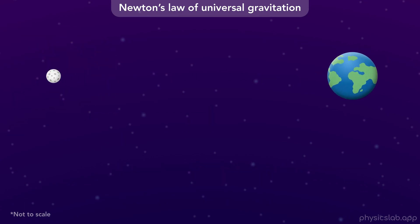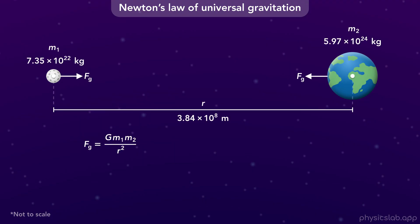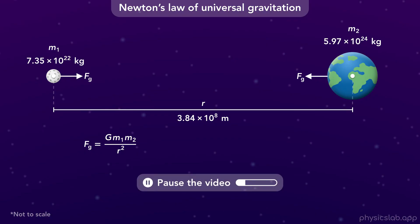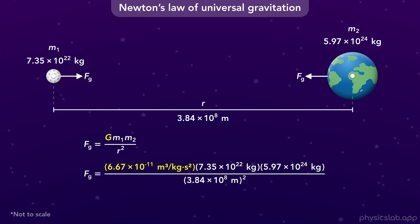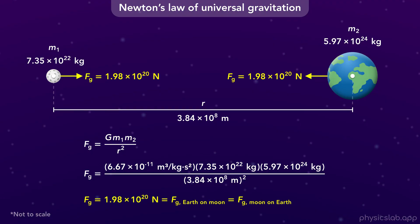Now let's look at the force between the Earth and the Moon. We'll say the Moon is mass 1 and the Earth is mass 2. We plug in the same value for G, then 7.35 times 10 to the 22 kilograms for the mass of the Moon, 5.97 times 10 to the 24 kilograms for the mass of the Earth, and 3.84 times 10 to the 8 meters for R. When we calculate that, we get 1.98 times 10 to the 20 Newtons for the gravitational force on the Moon and the Earth. This is still a pretty large gravitational force.